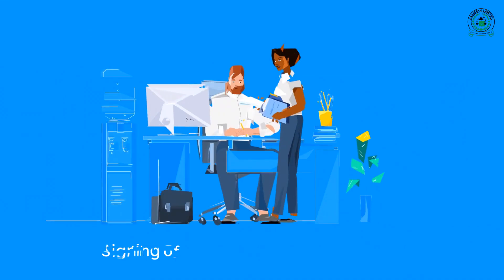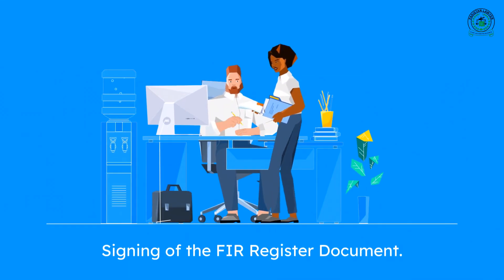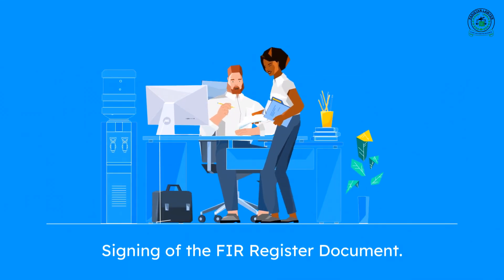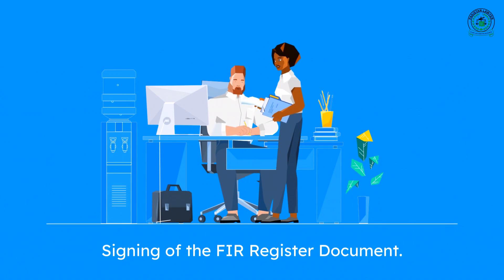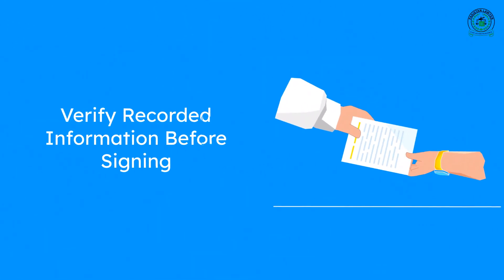Signing the FIR. Once the police have recorded the information in the FIR register, you as the informant must sign the document. It's crucial to verify that the recorded information matches the details you provided before signing it.